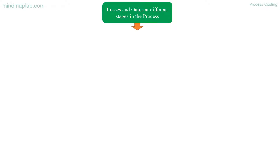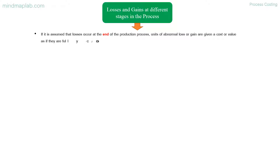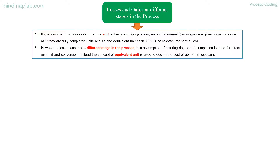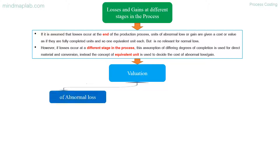Losses and gains at different stages in the process: if losses occur at the end of the production process, units of abnormal loss or gain are given a cost as if they are fully completed units — one equivalent unit each. This is not relevant for normal loss. However, if losses occur at a different stage in the process, the concept of equivalent units is used, applying differing degrees of completion for direct material and conversion costs to determine the cost of abnormal loss or gain.